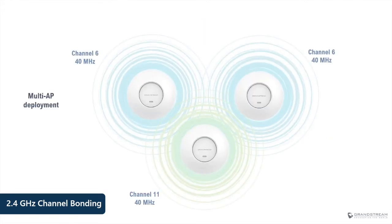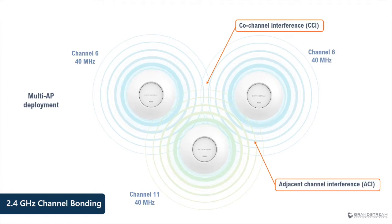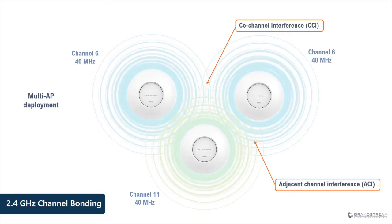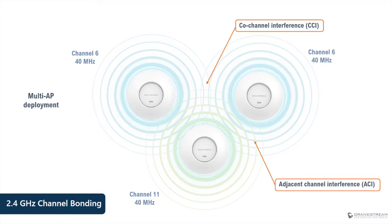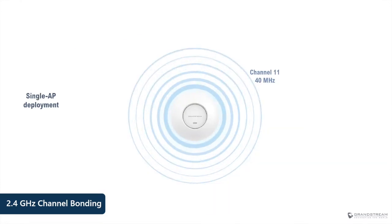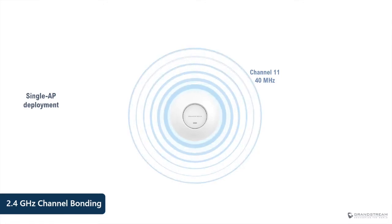In a multi-AP deployment scenario with access points using 40 megahertz channels on 2.4 band, two critical issues emerge: first, co-channel interference, which results from two adjacent access points using the same channel; and second, adjacent channel interference, which is more serious. Both can lead to significant degradation in Wi-Fi performance. One scenario where you might use 40 megahertz channels is when you have an isolated access point not subject to interference from adjacent APs, and where clients support 40 megahertz — otherwise there is no benefit.